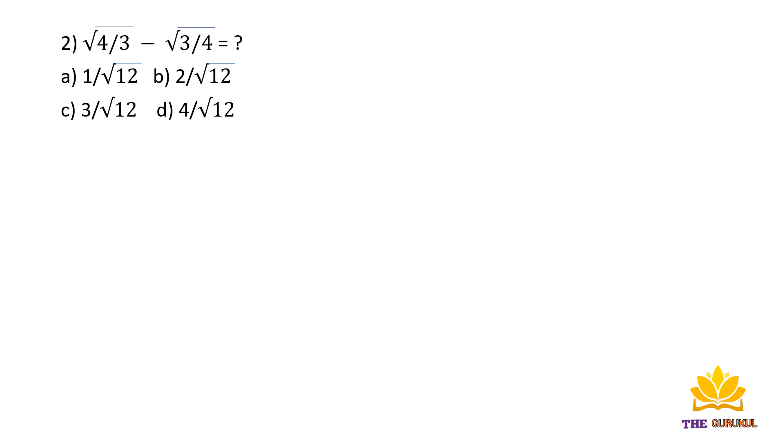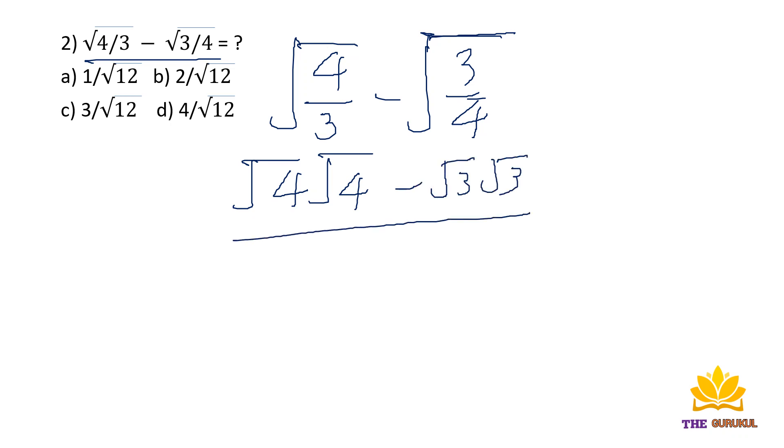Next question: root 4 times root 4 minus root 3 times root 4. We can write root 4 as 4 to the power 1 by 2 plus 4 to the power 1 by 2, which gives 4 to the power 1.